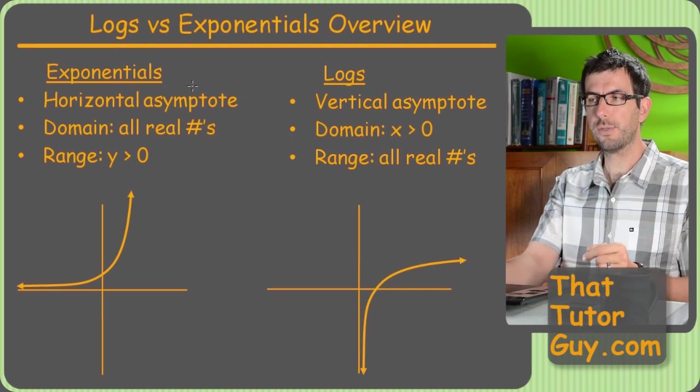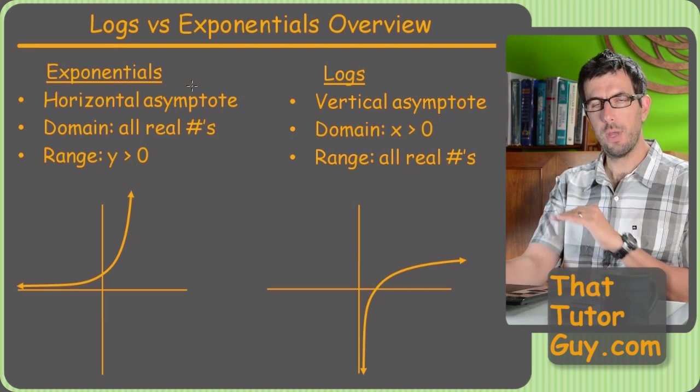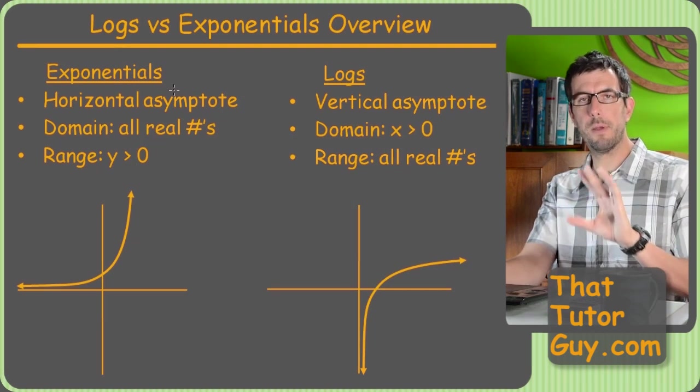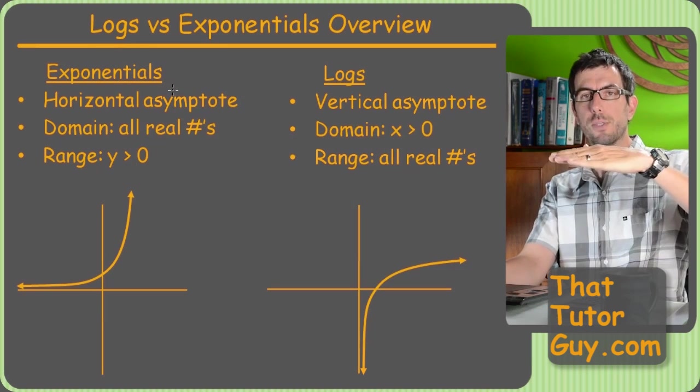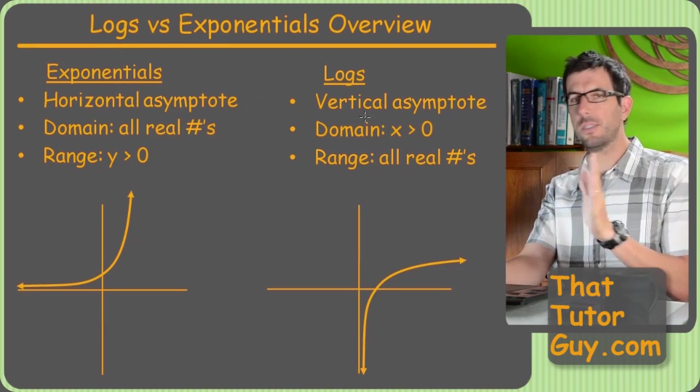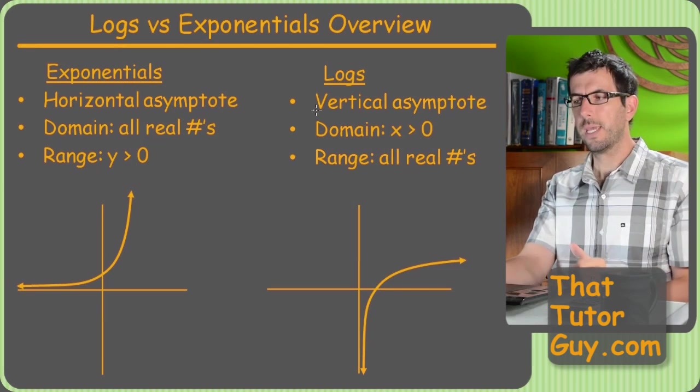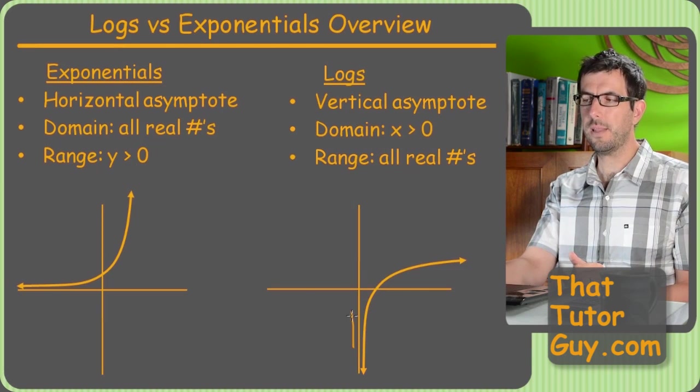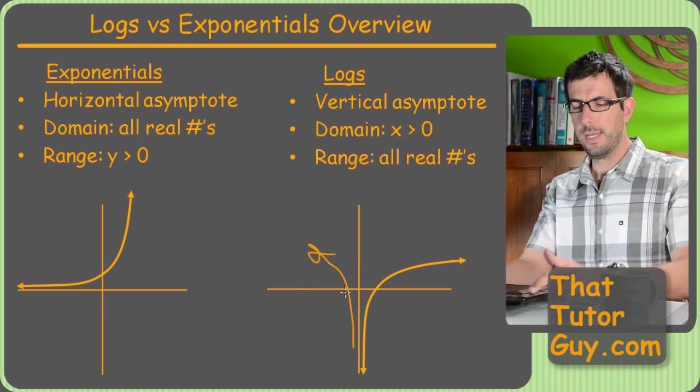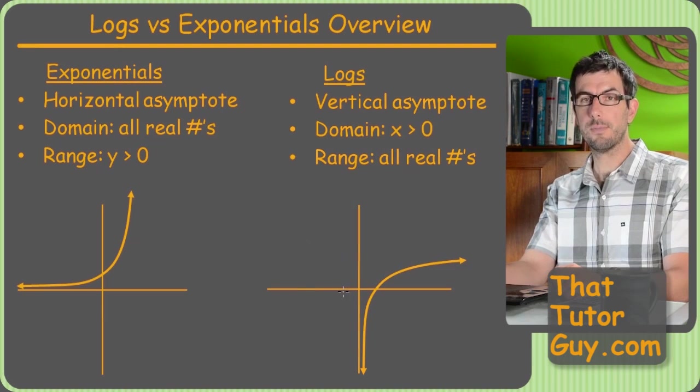Because if you're always just like, exponentials have a horizontal asymptote, no ifs, ands, or buts. No matter how many times you flip them or switch them, shift them around, there's always a horizontal asymptote. And for logs, it's always vertical, no matter what you do. Even if it ends up being flipped and it comes off to left instead of right, it's still going to be a vertical asymptote.